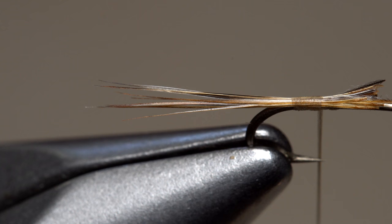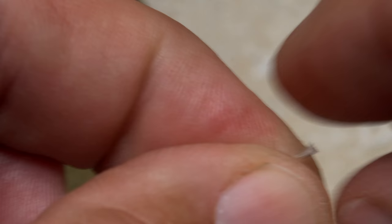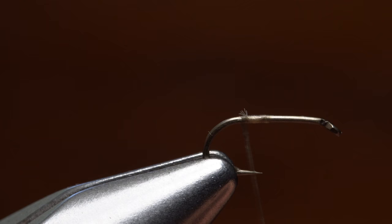Strip eight or so grizzly hackle fibers free from the stem while keeping their tips aligned. Snip the curlies off to keep them from snagging your thread and to reduce bulk.